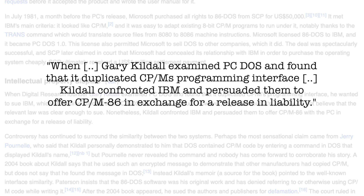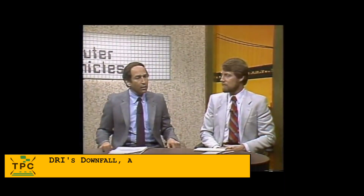Microsoft first licensed and then ultimately bought 86-DOS from Seattle Computing Products to make it IBM DOS and MS-DOS. And when DRI finally could deliver CPM-86 in 1982, it sold for a horrendous 240 US dollars.